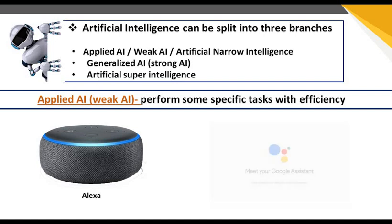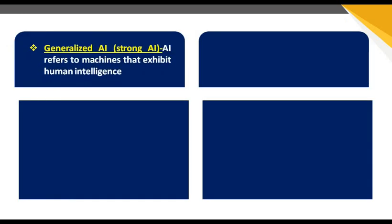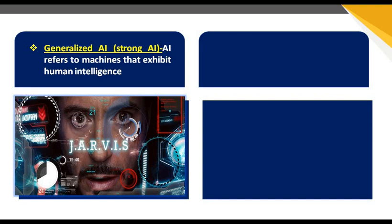Examples of Applied AI include Alexa and Google Assistant, which you can use on a daily basis. These are treated as Applied AI, also called Weak AI. When we move forward and understand Generalized AI or Strong AI, it refers to machines that exhibit human-level intelligence.